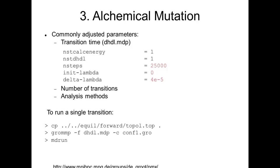The important parameters in the MDP file for the alchemical mutation include: calculating the energy and dH/dλ every step; the number of steps controlling how quickly lambda changes between state 0 and state 1; the initial lambda (0 or 1 depending on starting state); and delta lambda, which is how much lambda changes per time step — delta lambda times n_steps should equal 1 or negative 1. You can also change the number of transitions and the analysis methods, and I will show how varying these parameters affects the results.